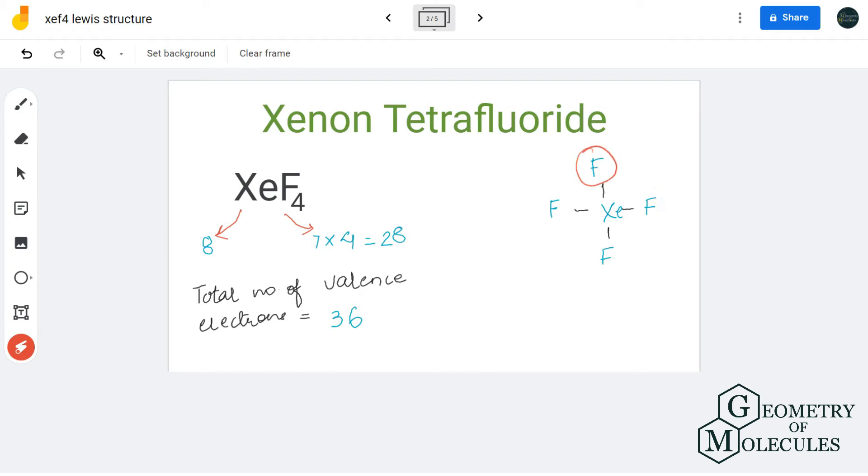Now let's start placing valence electrons around all the atoms. There will be 8 around the xenon atom, and although it is a noble gas, it can accommodate more than 8 electrons in its outer shell.